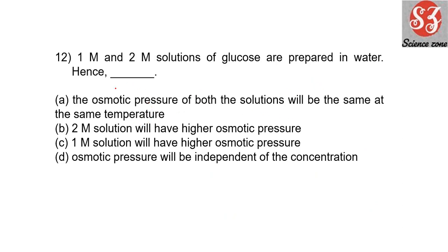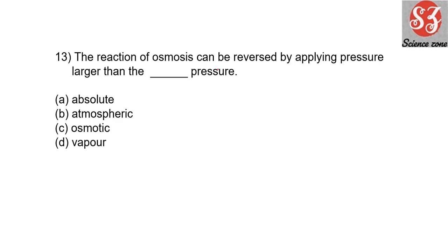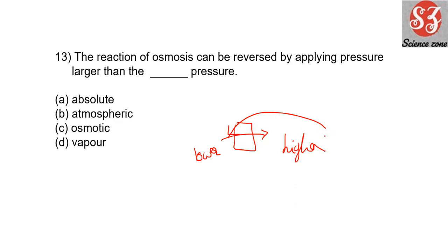Next: '1 mole and 2 mole solutions of glucose are prepared in water.' The 2 mole solution has higher concentration, and since osmotic pressure is directly proportional to concentration, it will have higher osmotic pressure. So option: 2 mole solution will have higher osmotic pressure. Next: 'The reaction of osmosis can be reversed by applying a pressure larger than ___ pressure.' Osmosis can be reversed — solvent movement goes from higher concentration to lower — by applying a pressure greater than osmotic pressure, that is option C.